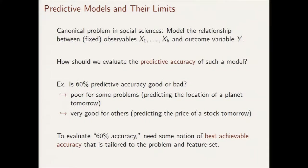Take the same level of predictive accuracy — 60% — and imagine you've obtained this predicting whether the S&P 500 goes up or down tomorrow. Suddenly, 60% is really phenomenal. This example illustrates two things: first, the predictive limits differ significantly across different problems. In the first problem, we expect to predict the outcome near perfectly given the feature set. In the second, conditioning on the features available, we can't expect perfect prediction. So to understand what 60% accuracy means, we need to compare it against the best achievable accuracy tailored to your problem and feature set.